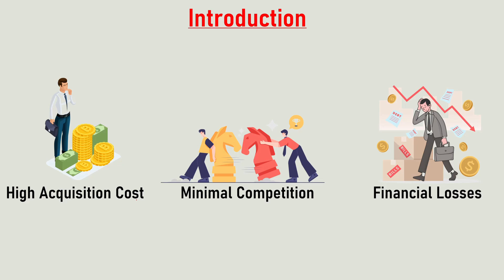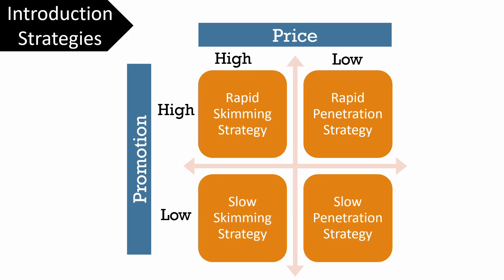Also there is minimal competition or absence of direct competition, and because the company is not yielding profit, it suffers financial losses. At this stage there are four strategies which are generally implemented: rapid skimming strategy wherein the product price is high and promotion is also high; slow skimming strategy wherein there is high price and low promotion; rapid penetration strategy wherein the price is low but promotion is heavy; and slow penetration strategy wherein both product price and promotion are low.